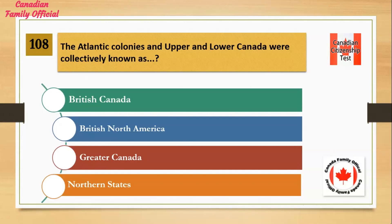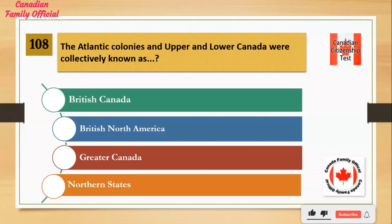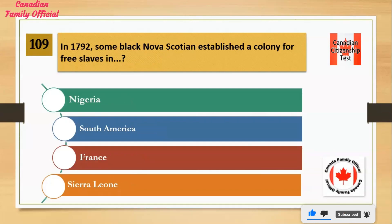The Atlantic colonies and Upper and Lower Canada were collectively known as: Number 1: British Canada. Number 2: British North America. Number 3: Greater Canada. Number 4: Northern States. And the answer is British North America.